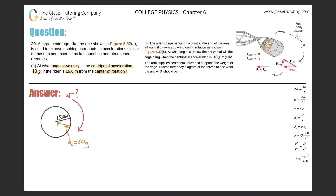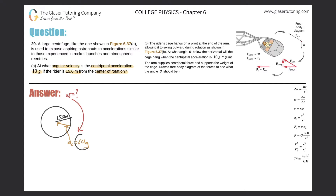I've drawn a little picture over here. We'll assume that the rider is at this location right at the edge, and he or she is 15 meters from the center of rotation. There's a centripetal acceleration — which always points towards the center — of 10 g's, and we're trying to find the angular velocity.